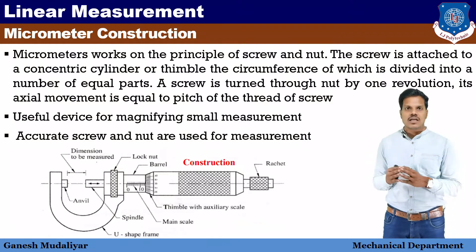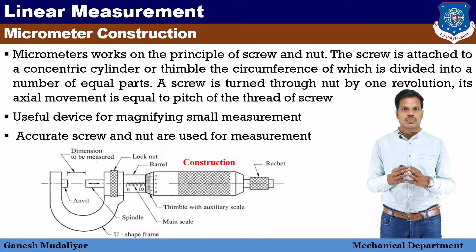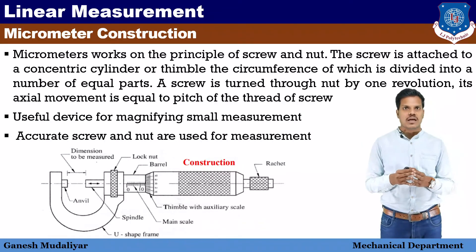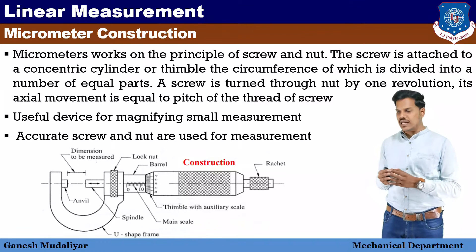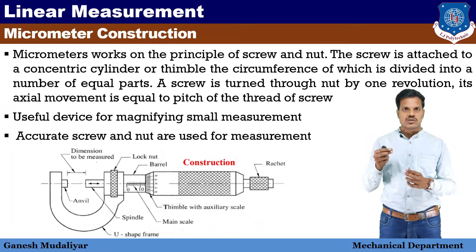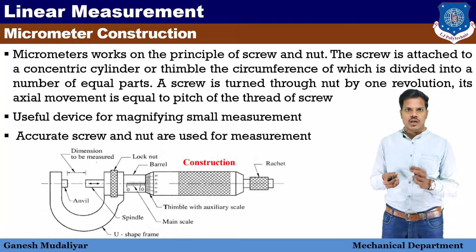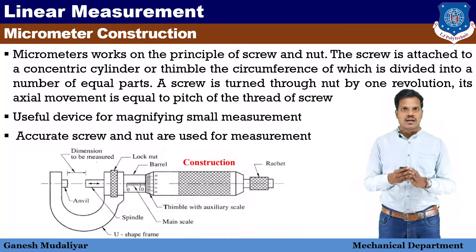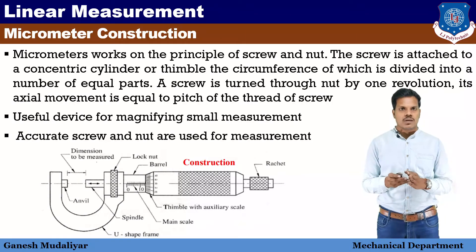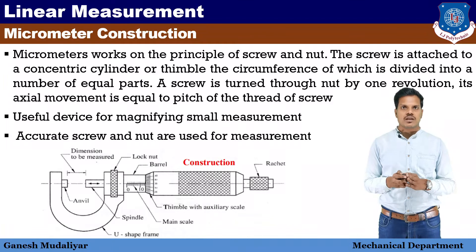The thimble is marked with 50 gradations. There is a ratchet screw. You roll the thimble here, and there will be a spindle that will propagate and touch the workpiece. The U-shape is shown here and this is the construction of the micrometer.